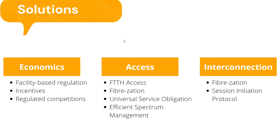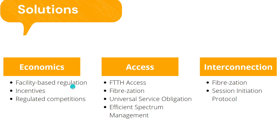Now let's move on to the solutions for the previous problems. For the economics part, there are facility-based regulation, incentives, and regulated competition. Facility-based regulation means that providers are encouraged to provide good network services in order to gain a good number of subscribers. Incentives are given to providers by the government to boost growth in internet broadband networks. For regulated competition, the government ensures there are no monopolies or rule breakings, so that growth is sustainable.